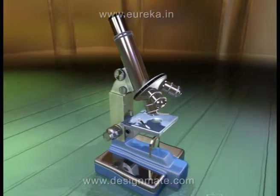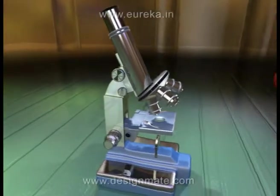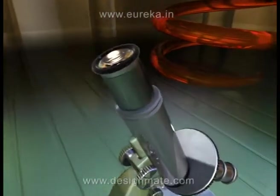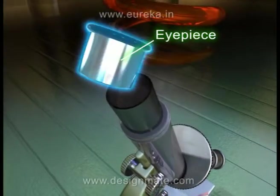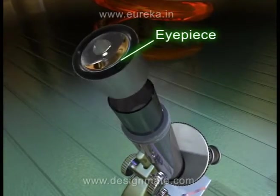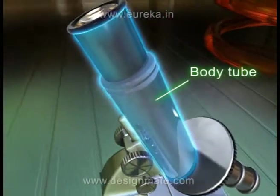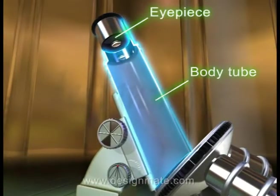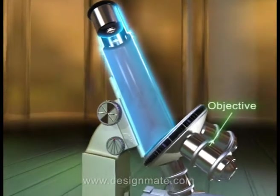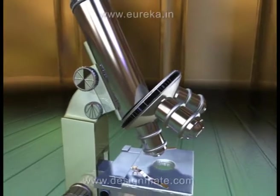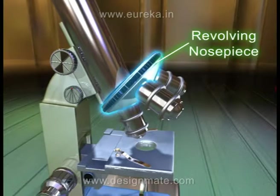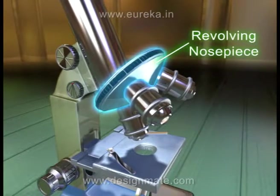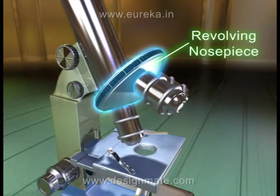We will first study the external construction of the microscope. The compound microscope consists of the eyepiece through which we see the image of the specimen. Then is the body tube, which is the long tube holding the eyepiece and connecting it to the objective. This is the nose piece, which holds the objective and is the rotating part of the microscope.